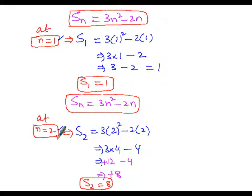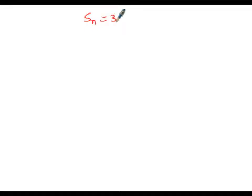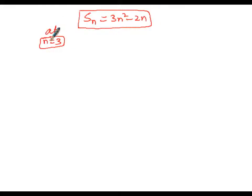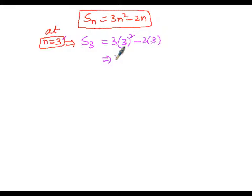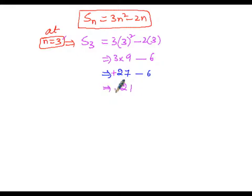At n=3: S(3) = 3 × 3² - 2 × 3 = 3 × 9 - 6 = 27 - 6 = 21. So S(3) equals 21.